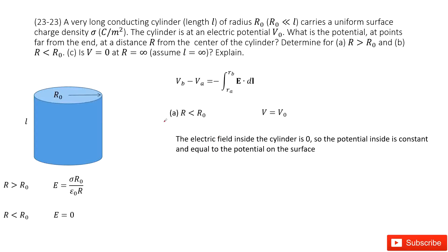For r < r₀, this is a conducting object and the surface potential is V₀, which means everywhere inside or at the surface the potential is the same. So the potential for r ≤ r₀ is simply equal to V₀.